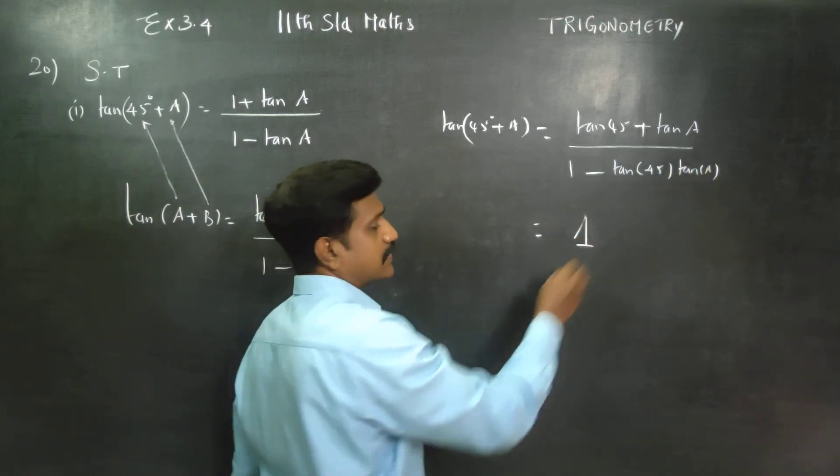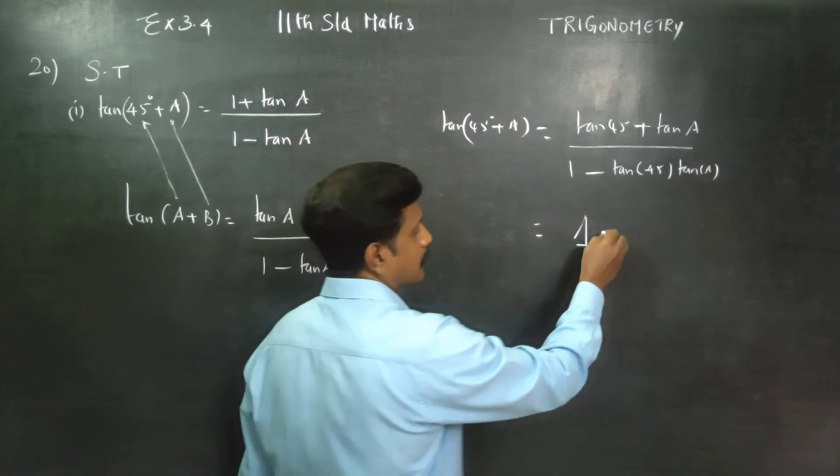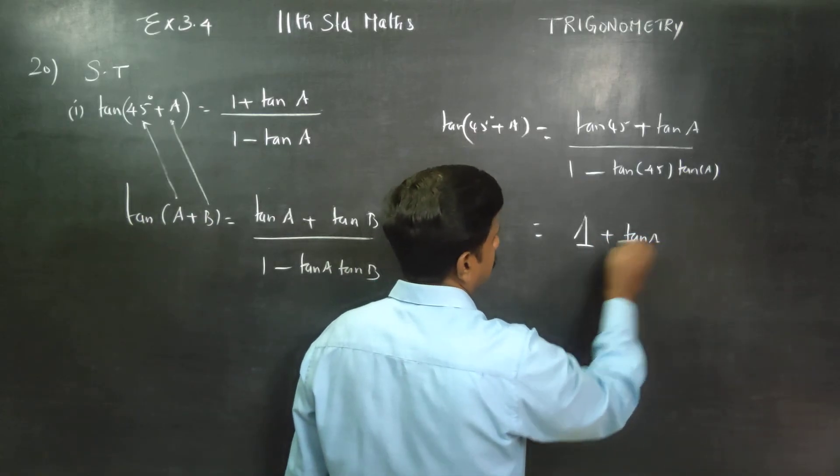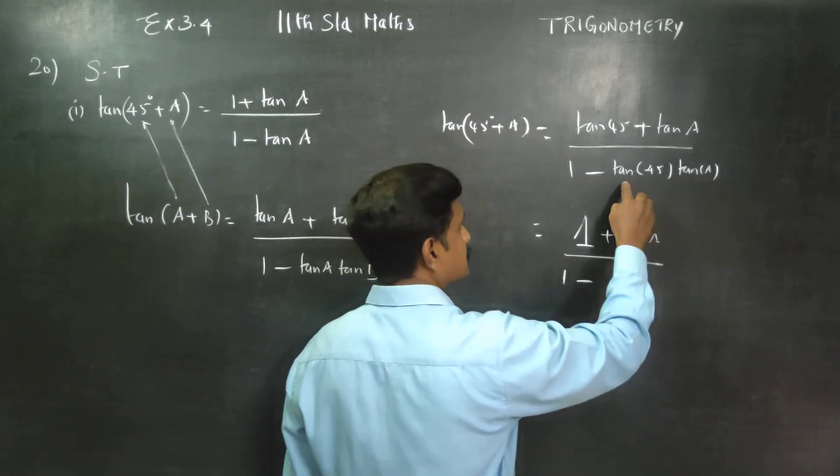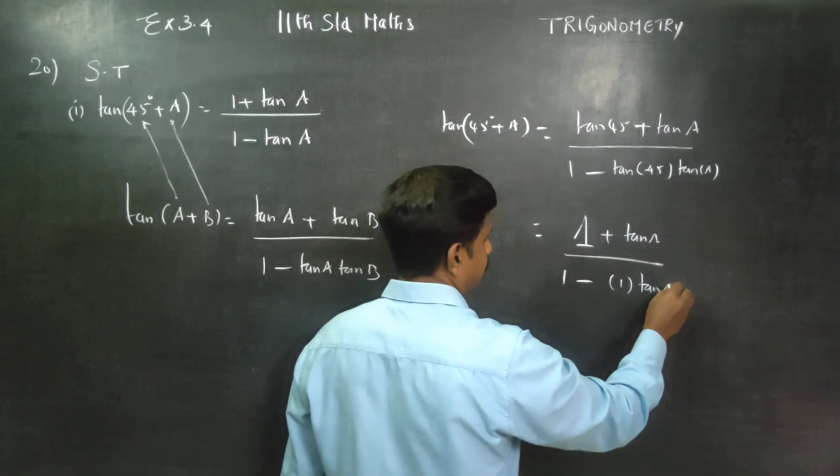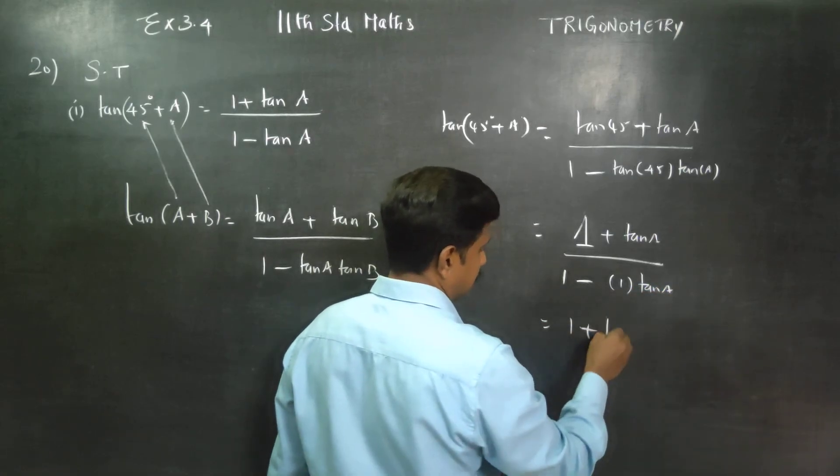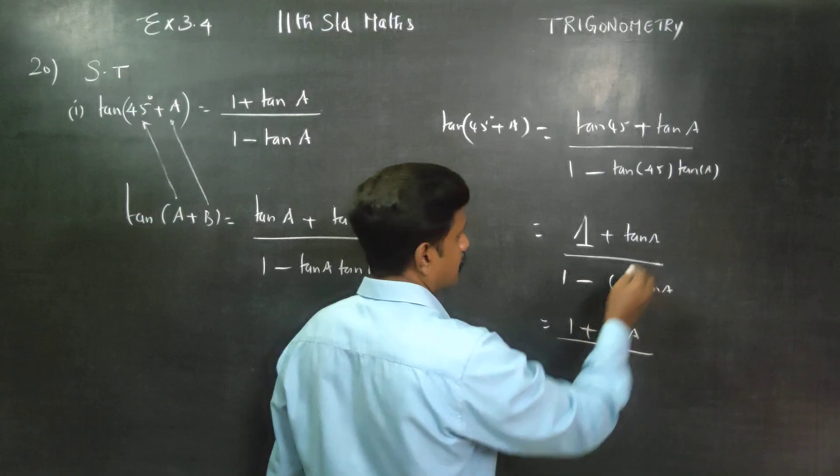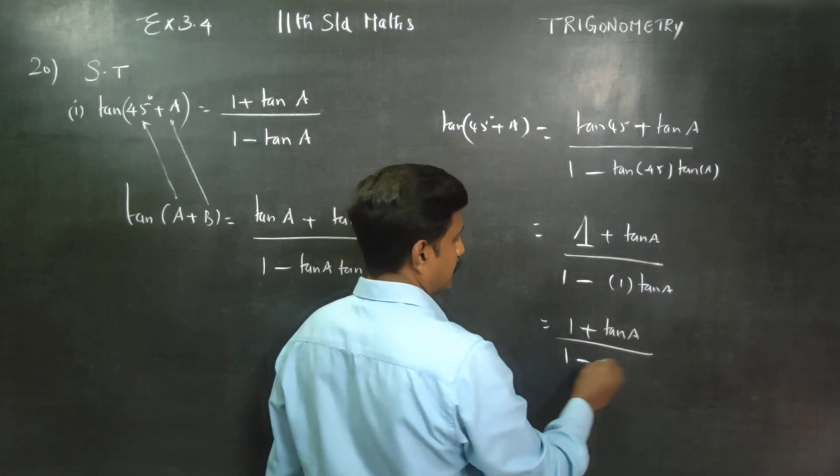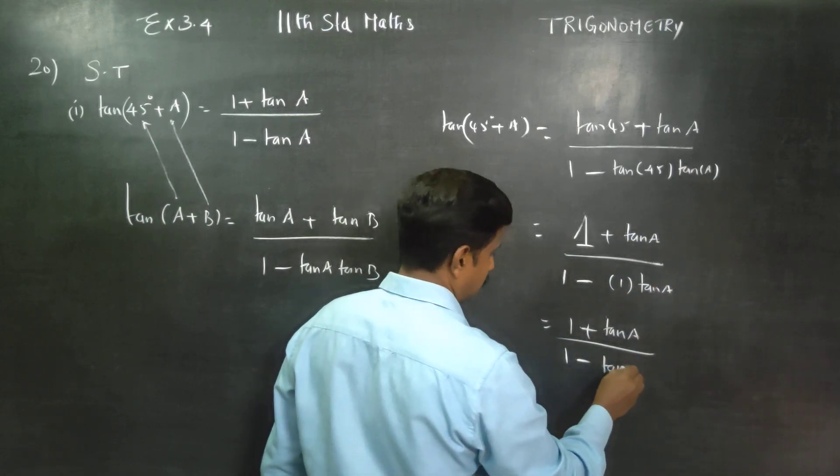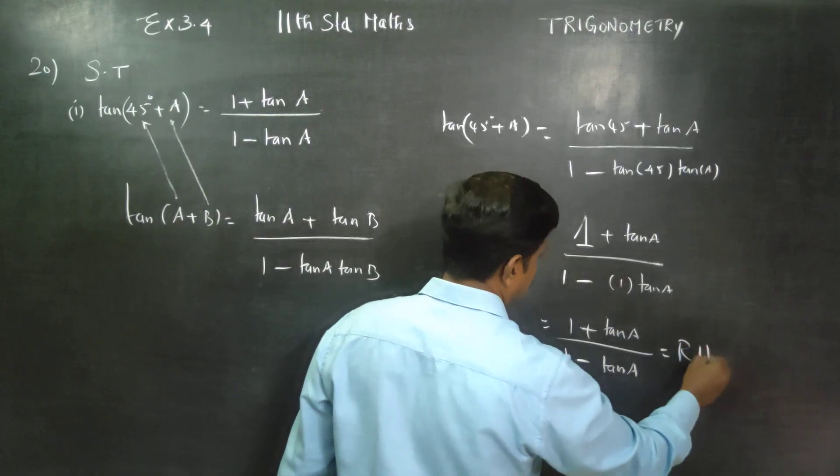Tan 45 is equal to 1. So, 1 plus tan A by 1 minus tan 45 again 1 into tan A. Therefore, 1 plus tan A by 1 minus tan A is equal to RHS.